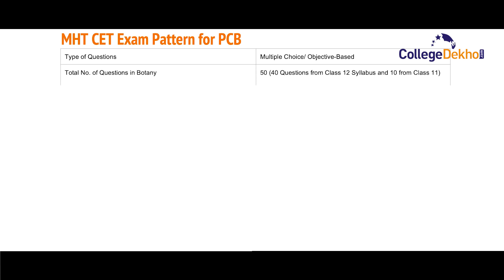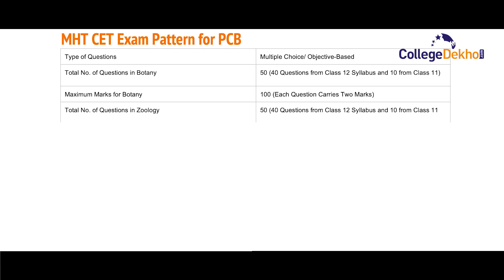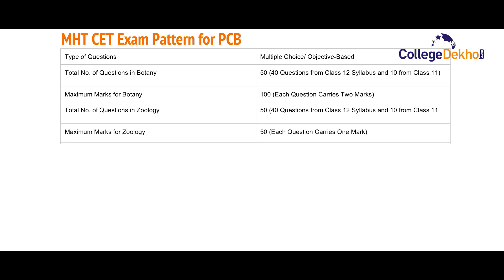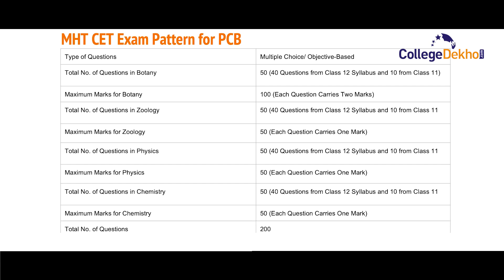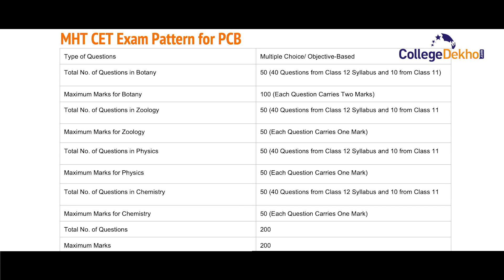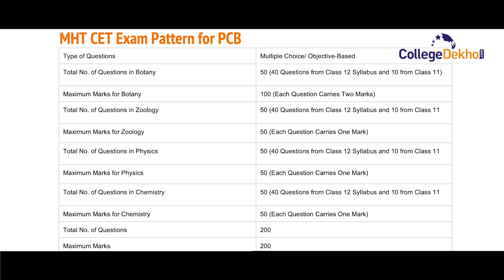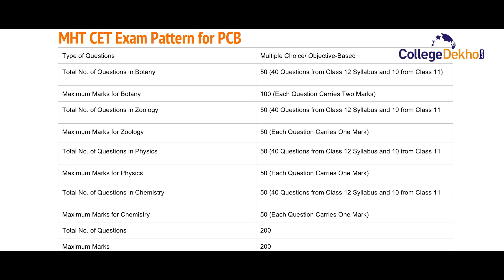Now let us look at the MHT SET exam pattern for the PCB group. There will again be multiple choice questions. The total number of questions in Botany will be 50, out of which 40 questions will be from the Class 12 syllabus and 10 from Class 11. The maximum marks for Botany will be 100, with each question carrying two marks. The total number of questions in Geology will be 50 — 40 from the Class 12 syllabus and 10 from Class 11. The maximum marks for Geology will be 50, with each question carrying one mark. For Physics, the similar pattern applies: 50 questions, 40 from Class 12 and 10 from Class 11, with maximum marks of 50 and one mark per question.